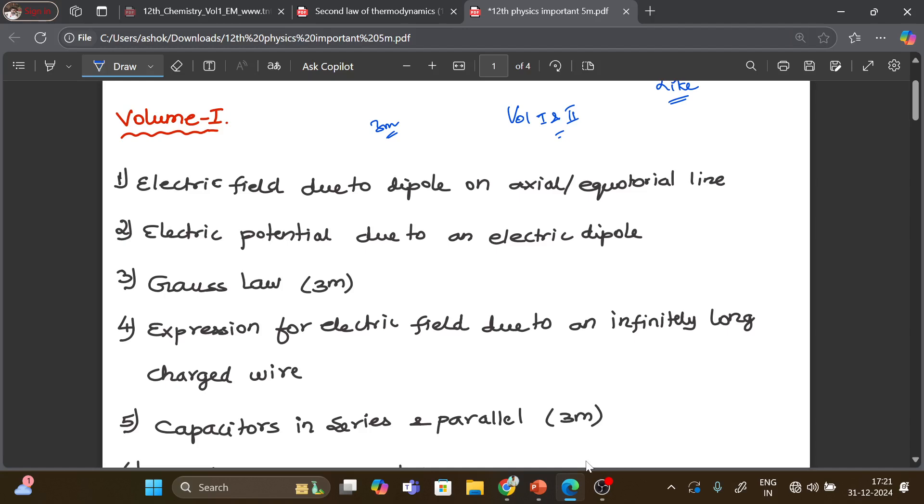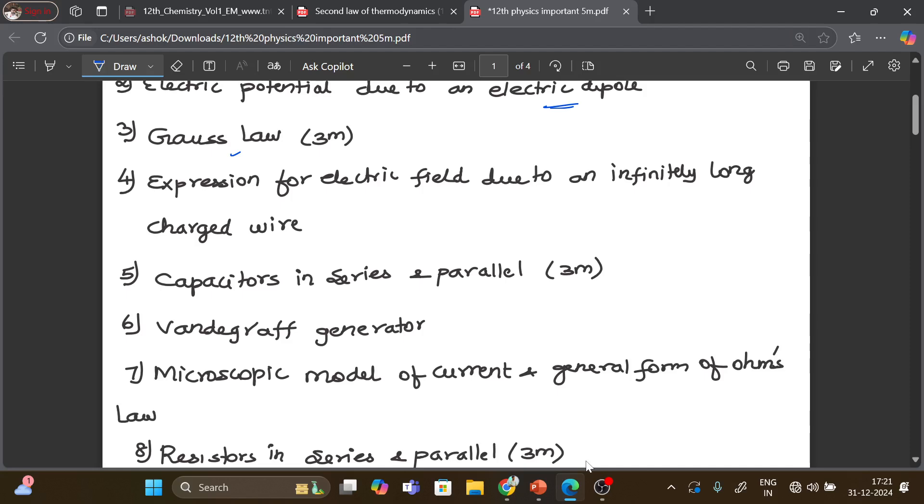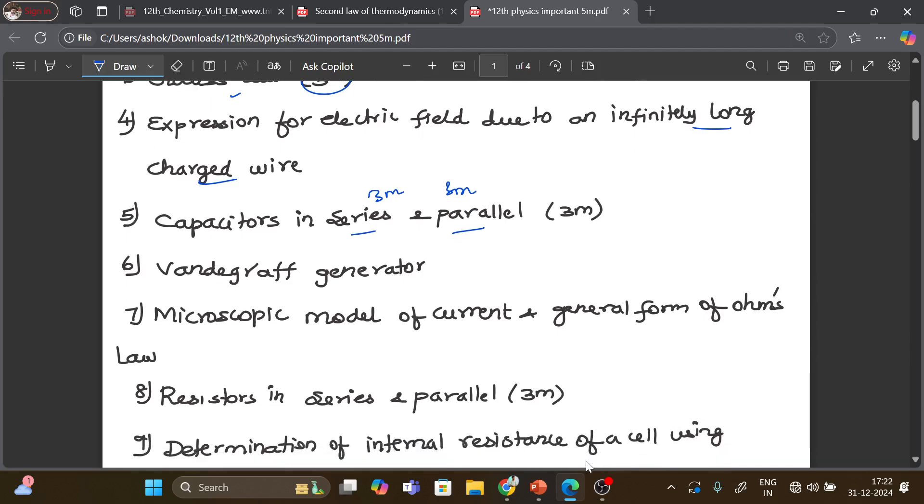Electric field due to axial and equatorial line is very important. Electric potential due to dipole. Important question is Gauss law. Electric field due to infinity long charged wire. In the Gauss law 3 mark question. Capacitors in series and parallel, series is 3 mark, parallel is 3 mark.